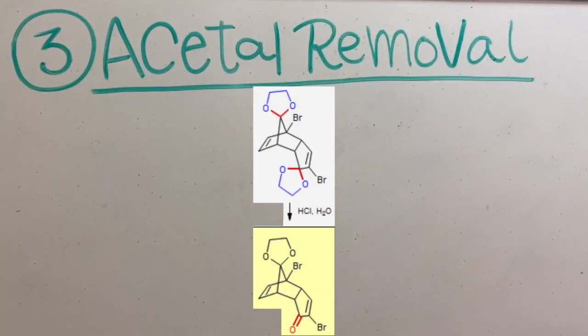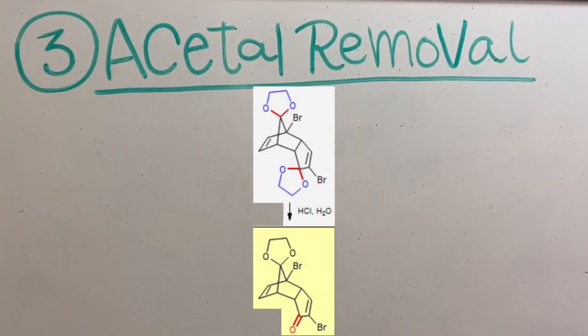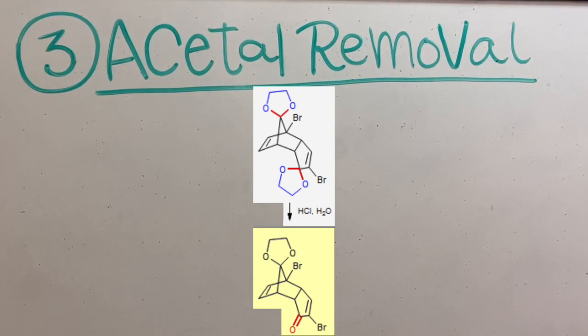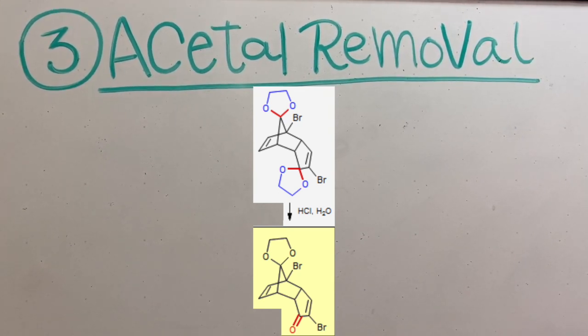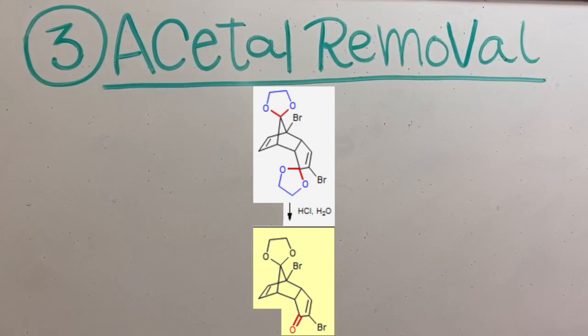The next reaction is the removal of an acetal. In this reaction, we have a cyclic acetal that we will hydrolyze using HCl and water to form a ketone.